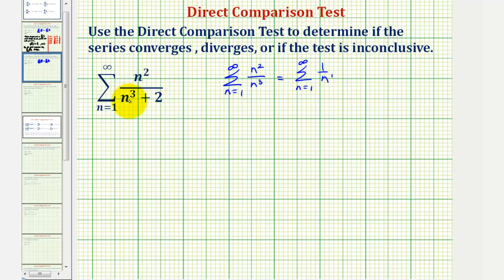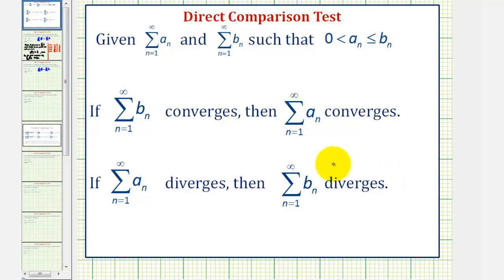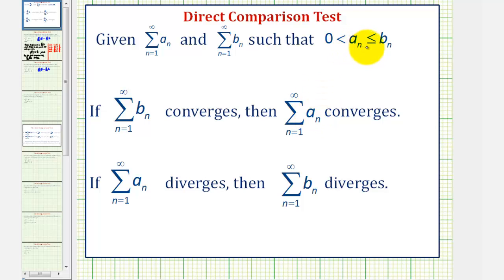Because we'll be comparing the given series to a diverging series, we want to show the terms of the given series are greater than or equal to the terms of the diverging series. If these terms are greater than or equal to the terms of the diverging series, the given series also diverges. If we were comparing to a converging series, then we want to show the terms of our series given by a sub n are less than or equal to the terms of the known converging series, and if this is the case then our series also converges.